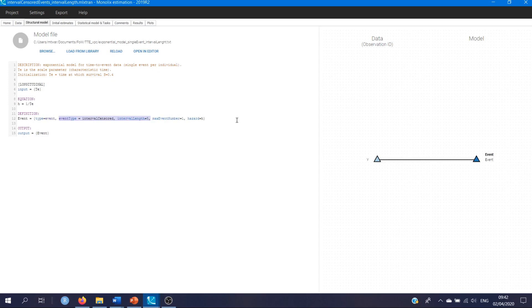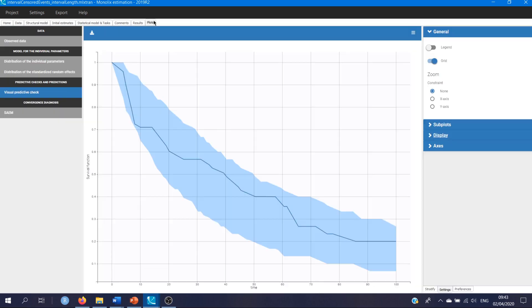In the second example, events are interval-censored. The hazard function is the same as in the previous case, but now, in the event definition, I added event type and interval length. Individuals do not have exactly the same censor intervals, but they are similar and close to 5, so I add this information to the model. VPC plot in this case is different, because the survival functions are estimated using the Turnbull intervals. Thank you for listening and take care.